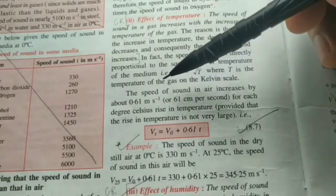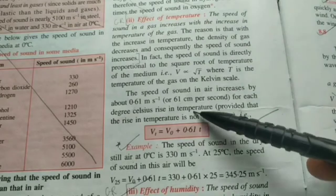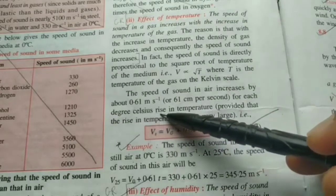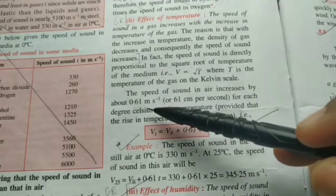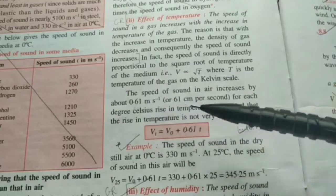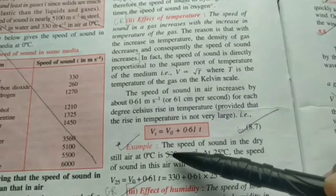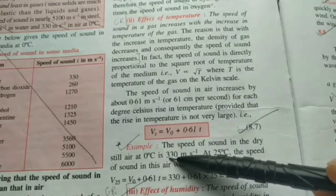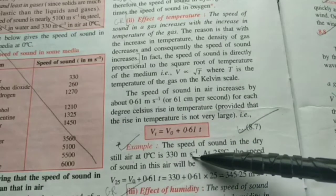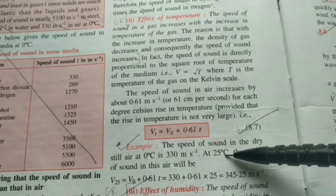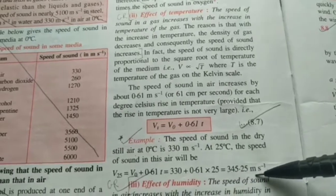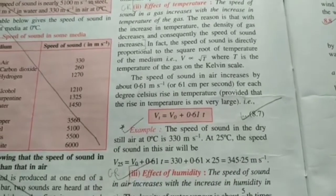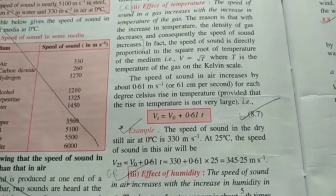It is observed that for every rise of one degree Celsius, the speed of sound increases by 0.61 meters per second. For example, at 0°C the speed of sound is roughly 330 m/s, so at 25°C it comes to approximately 345.25 m/s. Such detailed numericals won't come in the exam, but you need to know this relationship.